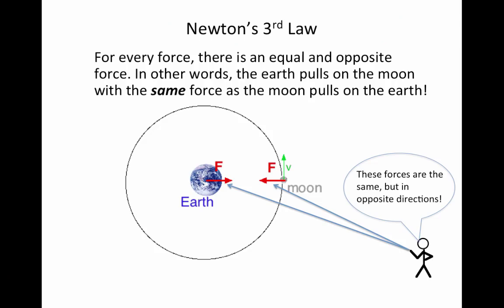Isaac Newton knew a few things when he started pondering that question about the apple and the moon. He created his third law of motion: for every action there's an equal and opposite reaction. So for the earth and the moon, whatever force existed between them, those forces would be equal and opposite — the earth pulls on the moon the same amount that the moon pulls on the earth, but in opposite directions.